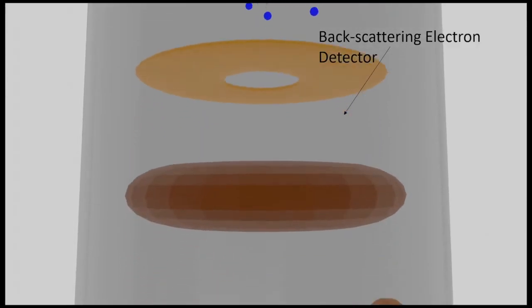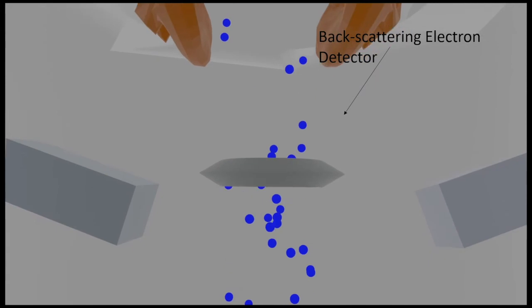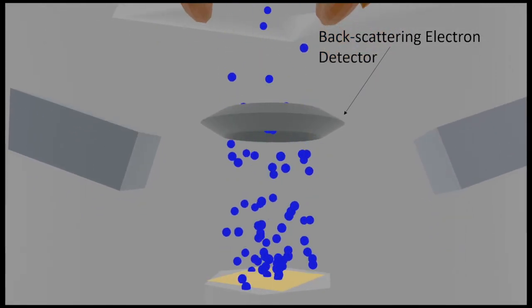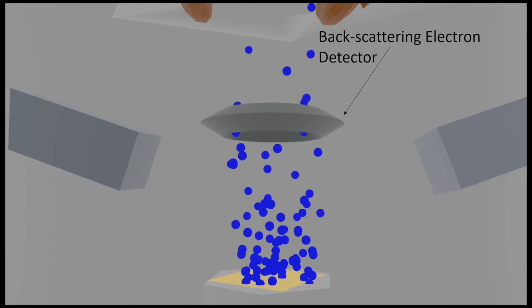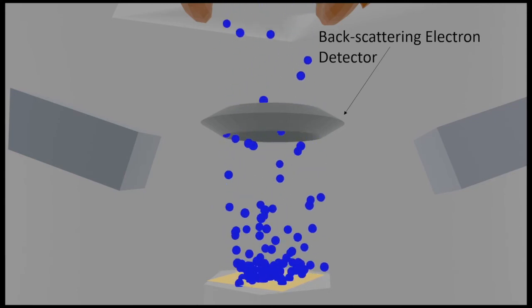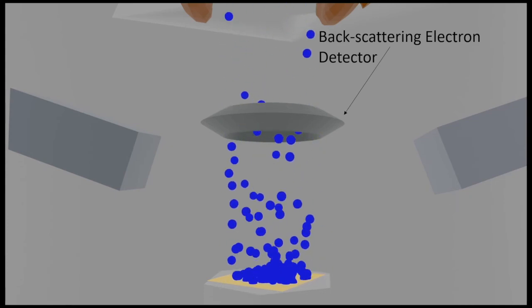The second detector is the backscattering electron detector. It is for the electrons that came from the electron gun and bounced straight back up after interacting with the sample. Once the electrons hit the detector, it will create a signal to help produce an image. Both the secondary and the backscattering electrons help produce a surface image.